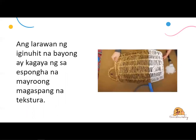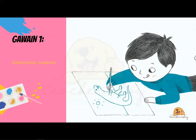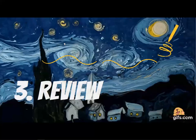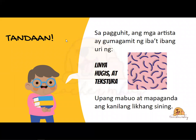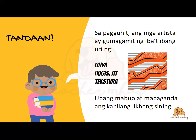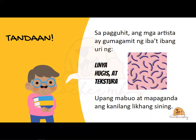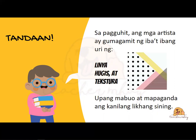For your activity, mag-iiwan si Teacher May ng link below, and ang link sa inyong Google Classroom, pwede ninyong gawin ang activity number one. Bago tayo magtapos, let us review our lesson for today. Laging tatandaan: linya, hugis, tekstura. Sa pagguhit ng mga artista o painters, gumagamit ng iba't ibang uri ng linya, iba't ibang uri ng hugis, at iba't ibang tekstura — para mabuo at mapaganda yung kanilang artwork o likhang sining.